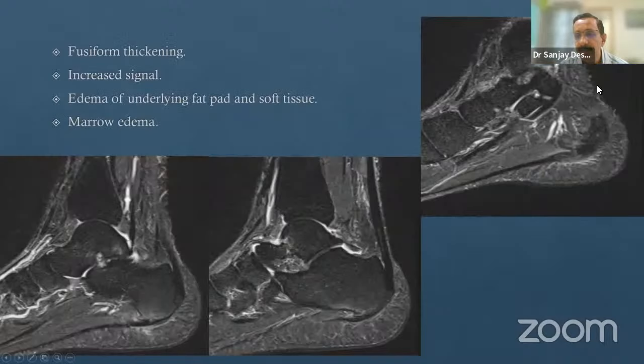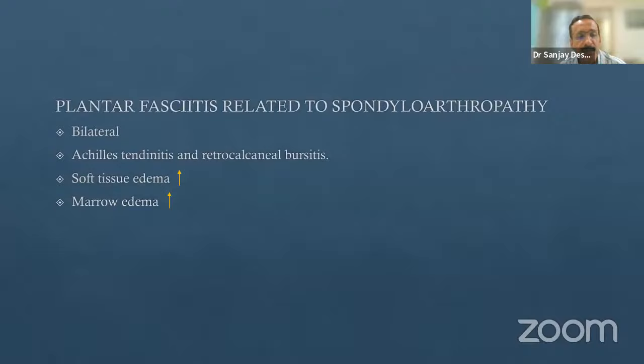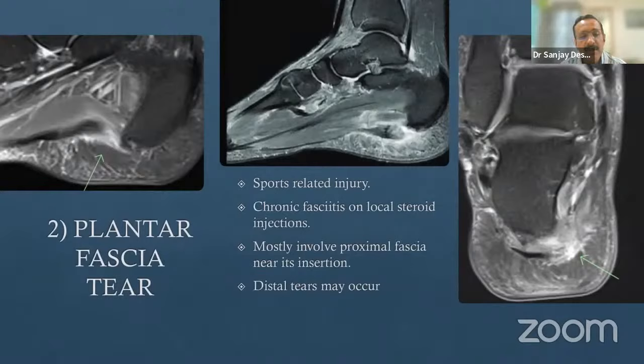This case shows significant thickening of the plantar fascia with surrounding soft tissue inflammation. When plantar fasciitis is related to spondyloarthropathy, it is usually bilateral, associated with Achilles problems like tendinitis, and retrocalcaneal bursitis, along with soft tissue and marrow edema.